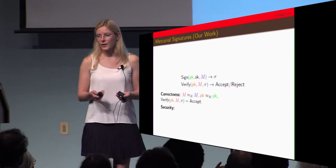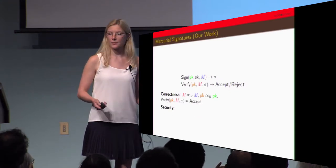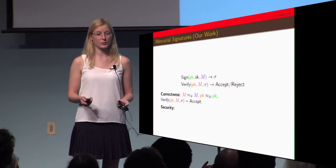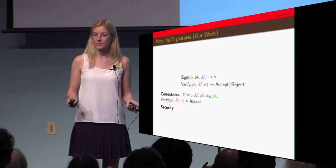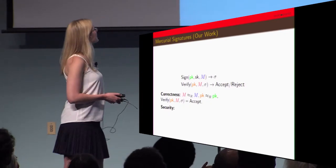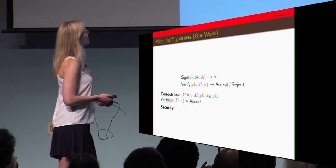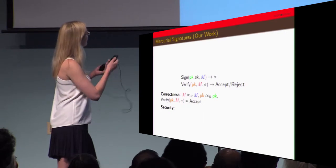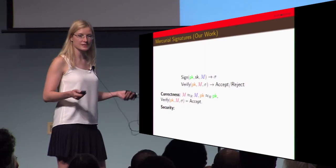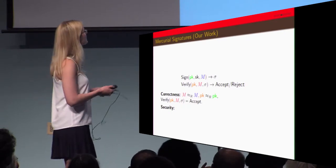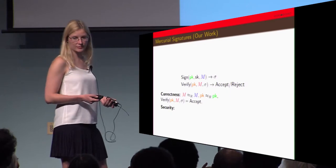What we did is we said, we're able to randomize the message into the same equivalence class, what about randomizing the public key as well? When we took a look at this idea, we were able to extrapolate and say correctness in this case means the messages have to be in the same equivalence class, and public keys have to be in the same equivalence class.